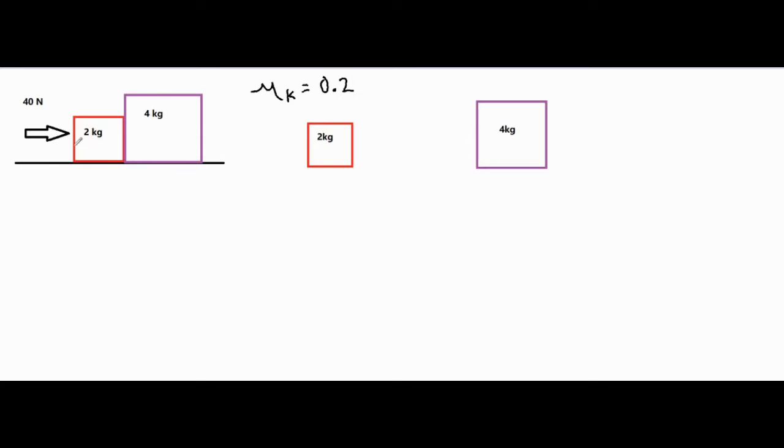In this case, take a look at the whole 6 kilogram system with the 2 and 4 together, and analyze each of the blocks separately as well. The first step is to analyze this whole entire system as one big 6 kilogram system.